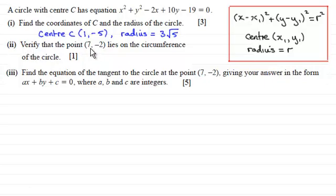Then we had to go on to verify that the point 7 minus 2 lies on the circumference of the circle.